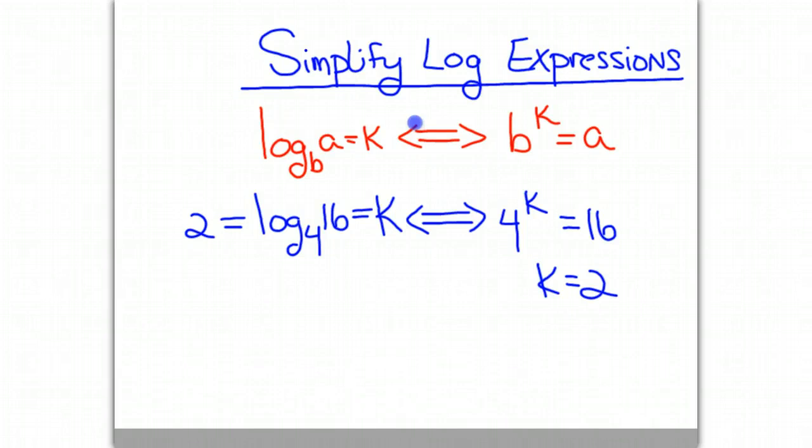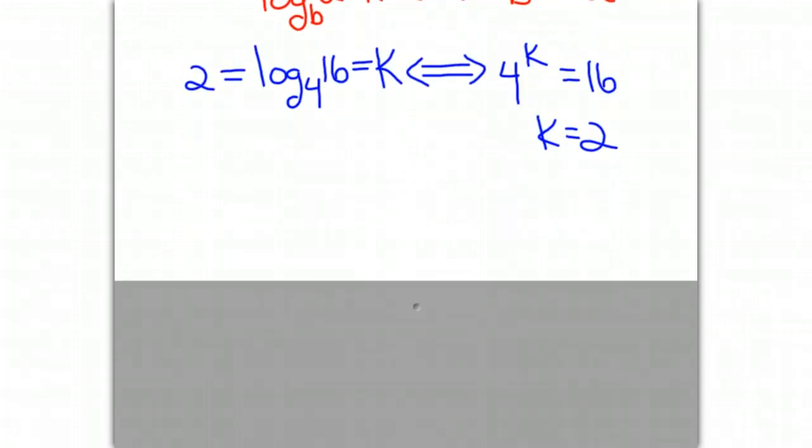For another example, let's think about the log base 3 of 81. That will equal some value of k. And converting that to its exponential form, that would say 3 to the k is equal to 81. And so we have to say, what power of 3 is equal to 81? And we can figure that k is equal to 4. So we know the log base 3 of 81 is equal to 4.